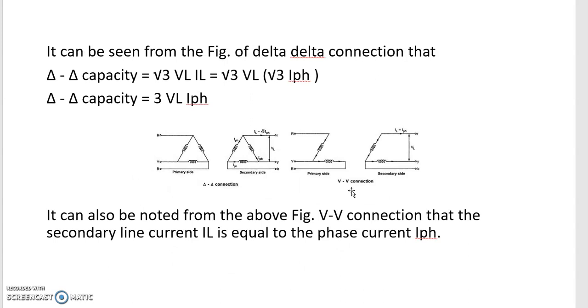As can be seen from the figure, this diagram shows the primary side and the secondary side. In case of delta-delta connection, the primary is connected in delta and the secondary is also connected in delta. The line current is equal to root three times phase current.